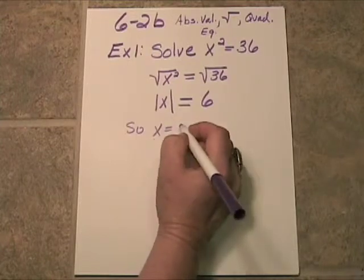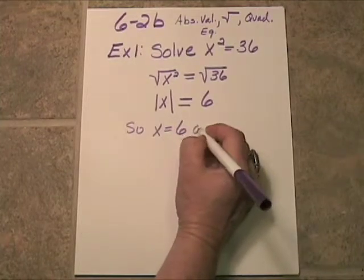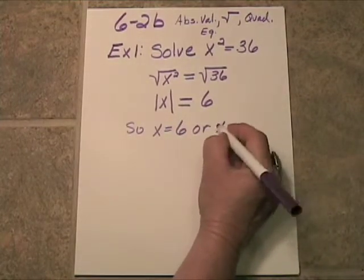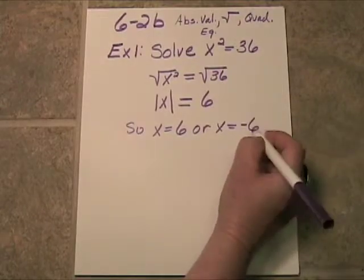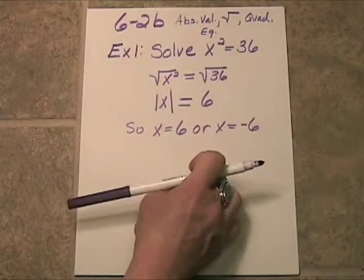So, x might be equal to 6, or x might be equal to negative 6. And you've got to consider both of these.